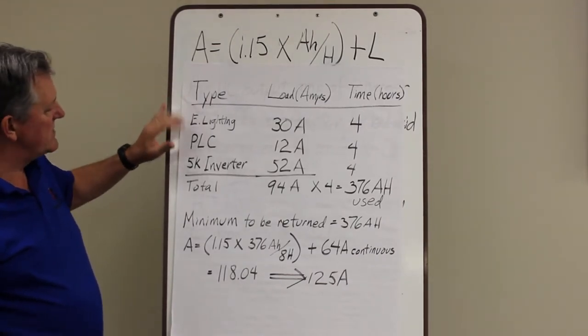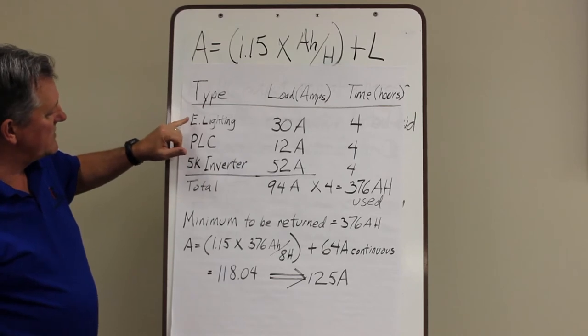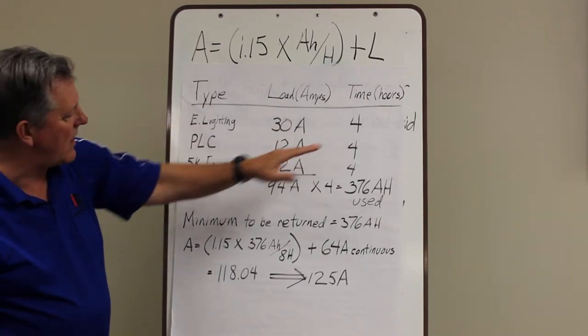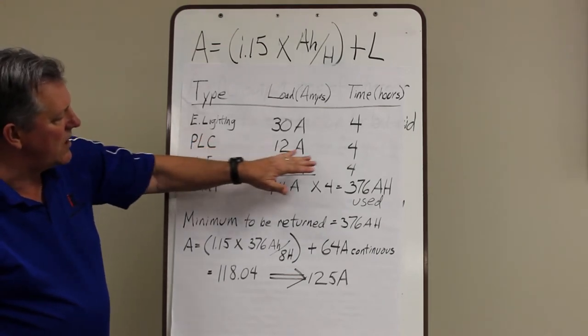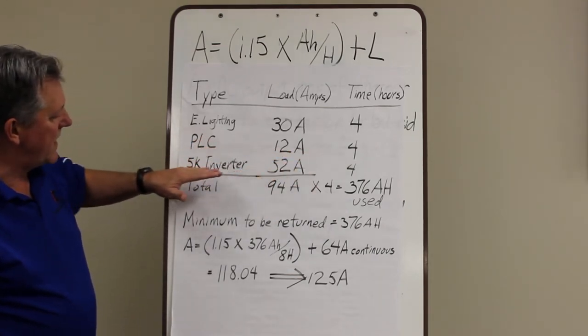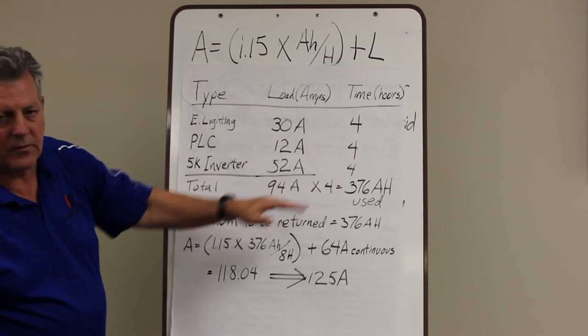In this case we made it pretty simple where emergency lighting is going to be 30 amps for 4 hours. PLC, that's all the controls, is 12 amps for 4 hours. And then a 5K inverter which is 52 amps for 4 hours.